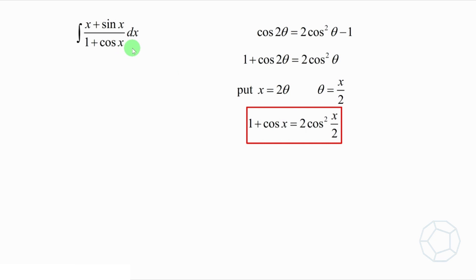Next, as the denominator is changed to half-angle x over 2, we should do the same for the numerator. Recall another double-angle formula, sin 2θ is equal to 2 sin θ cos θ. Put x equals to 2θ, then we have sin x is equal to 2 sin x over 2 cos x over 2. Great! We can put all this into the integral.